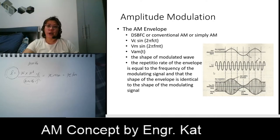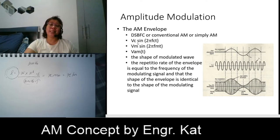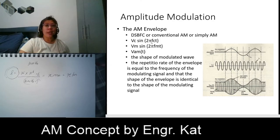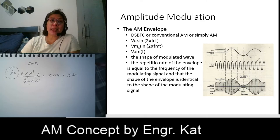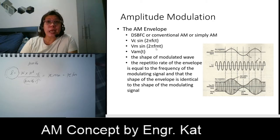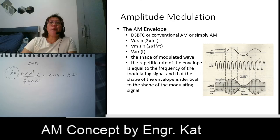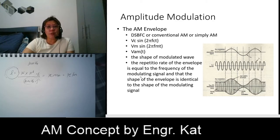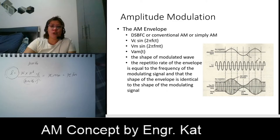The inputs to our modulator are: the carrier signal Vc·sin(2πfc·t), where Vc is the carrier amplitude and fc is the carrier frequency; and the modulating signal Vm·sin(2πfm·t), where Vm is the maximum amplitude and fm is the modulating frequency. The AM envelope shape is identical to the shape of the modulating signal, and the repetition rate of the envelope equals the frequency of the modulating signal.